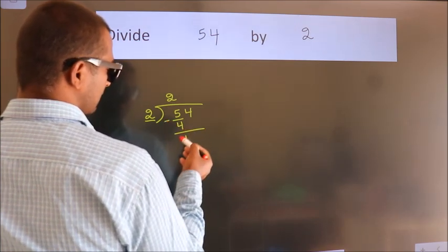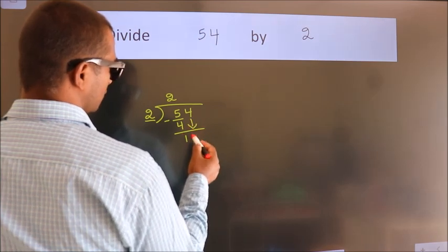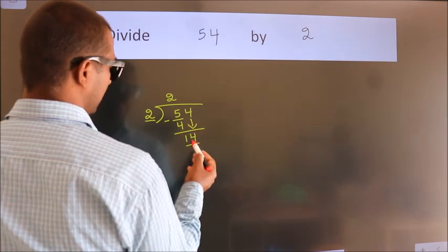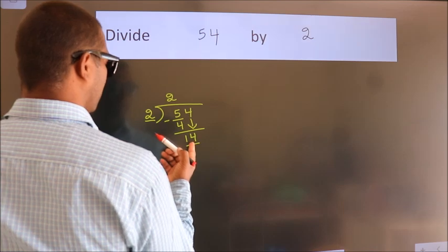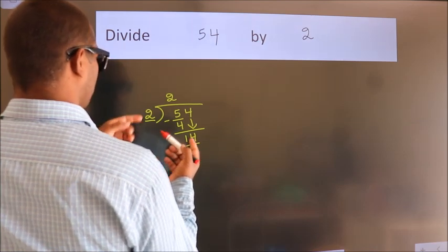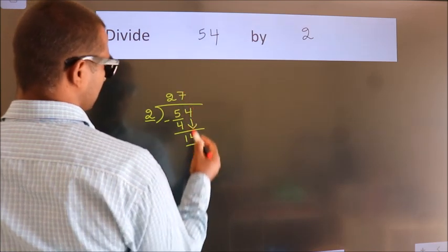After this, bring down the beside number. So, 4 down. So, 14. When do we get 14 in the 2 table? 2 times 7 is 14.